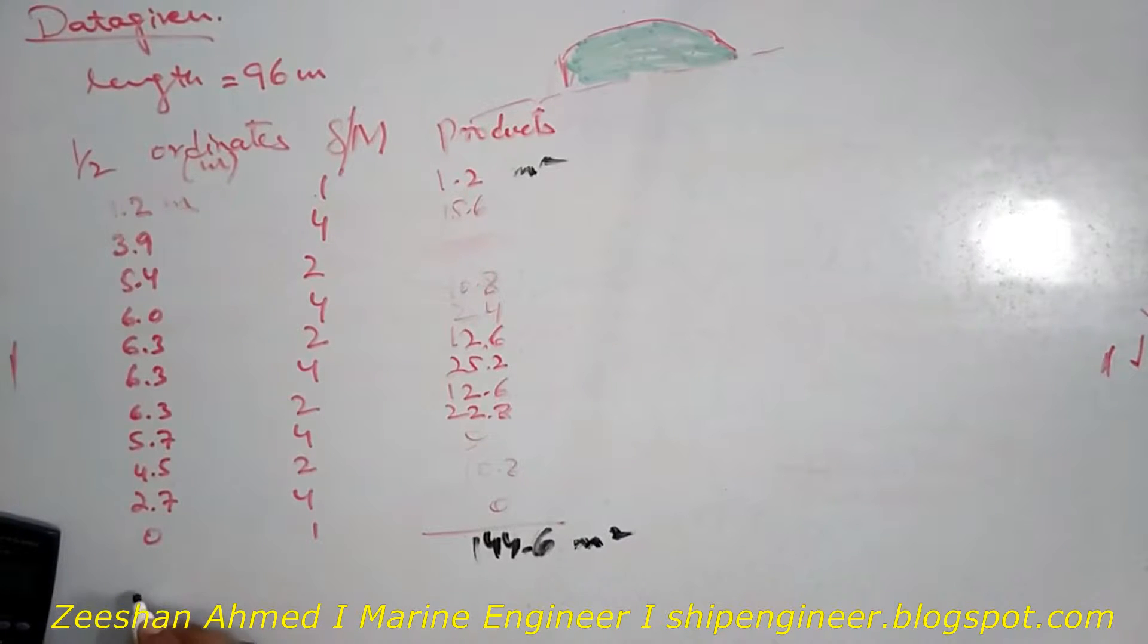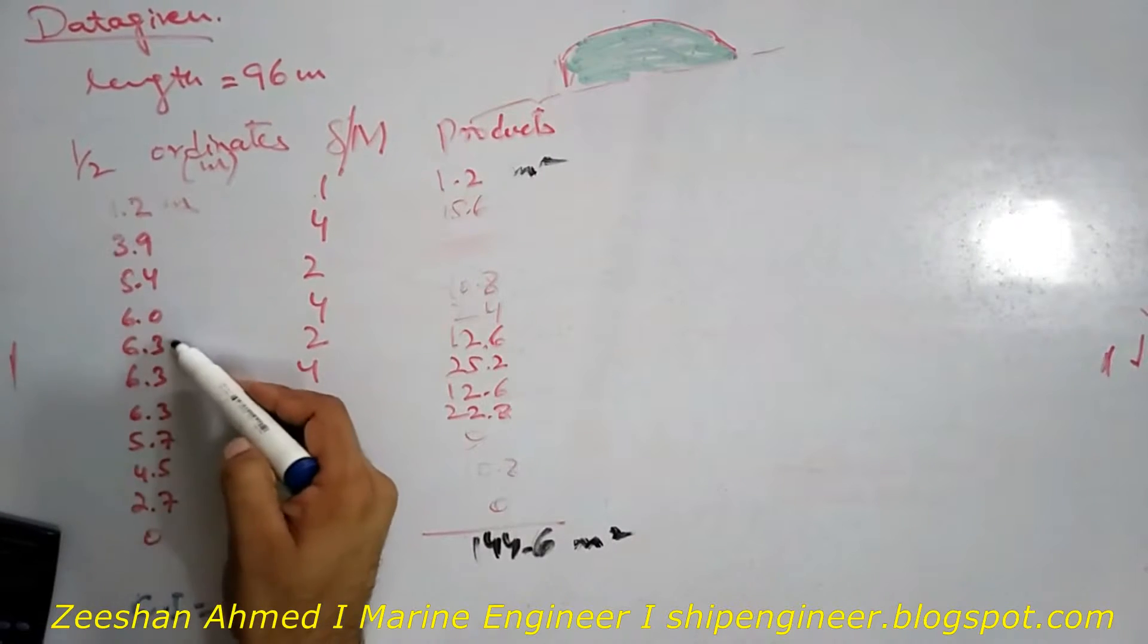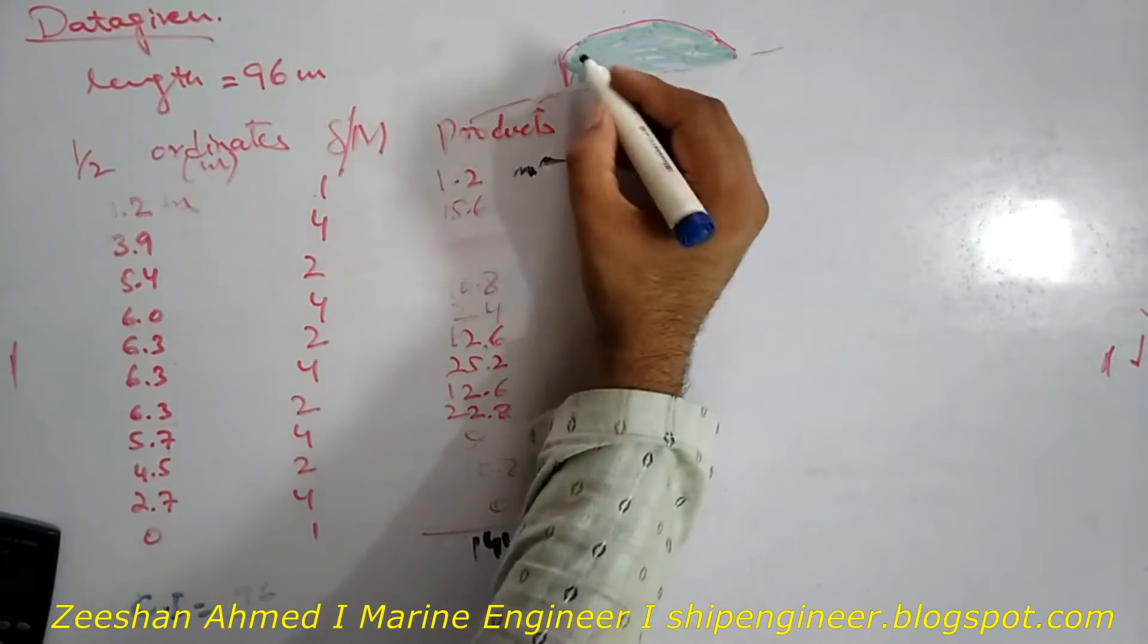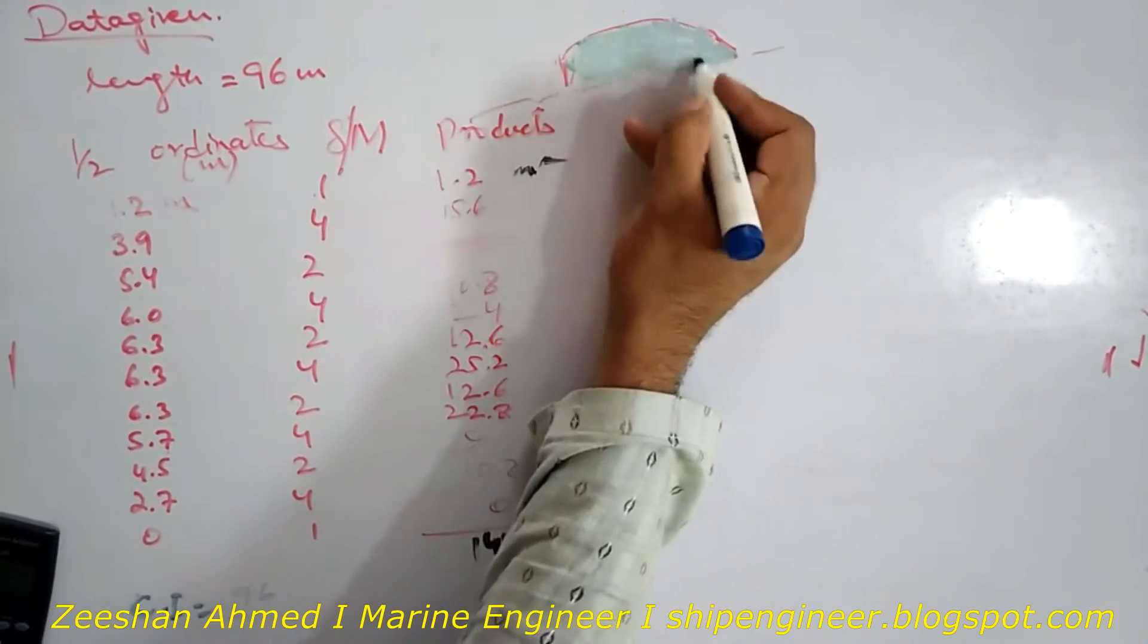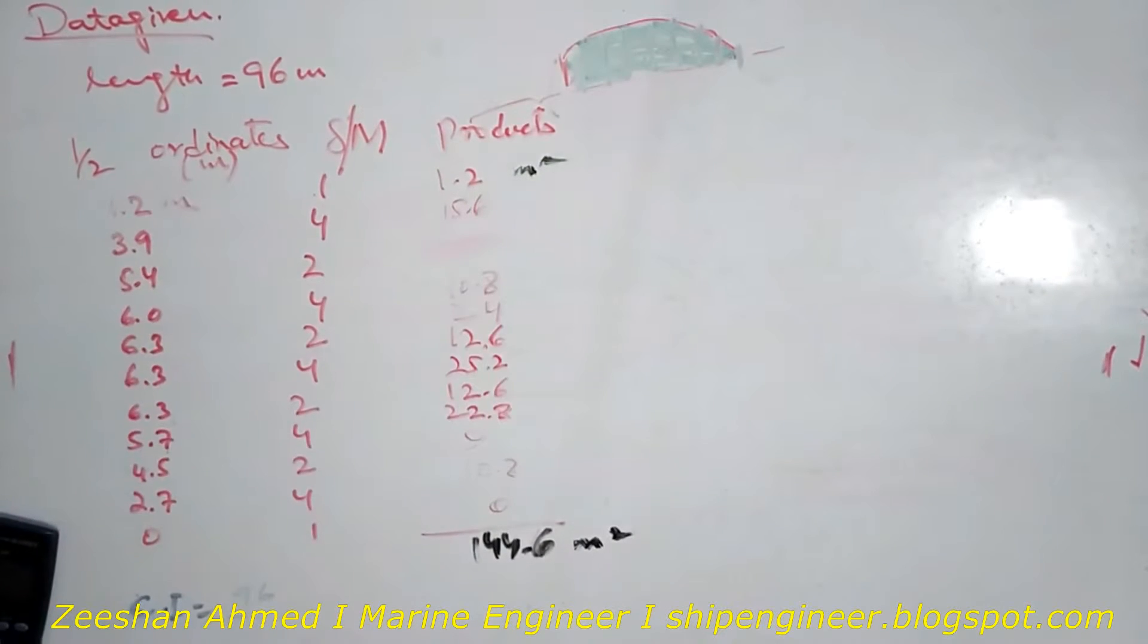Now we have to find the common interval. For common interval: 96 divided by the number of ordinates. Counting: 1, 2, 3, 4, 5, 6, 7, 8, 9, 10, 11. There are 11 ordinates, but 10 sections. So 96 divided by 10 gives us 9.6 meters.